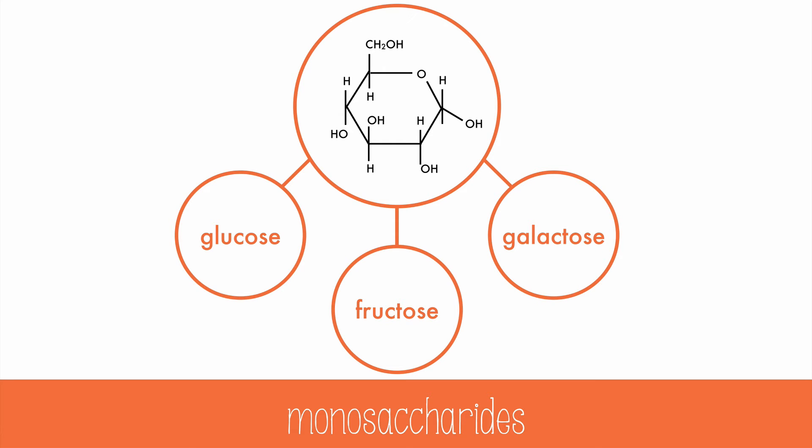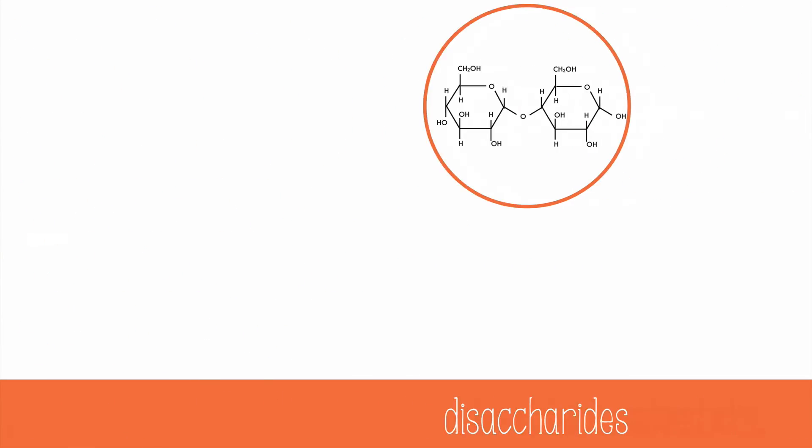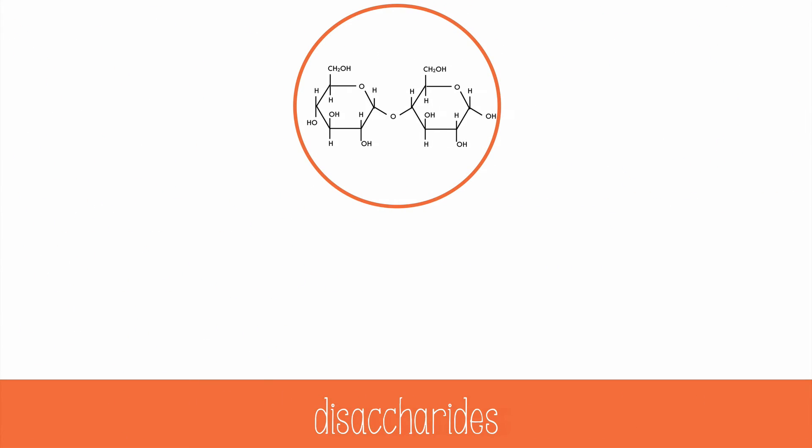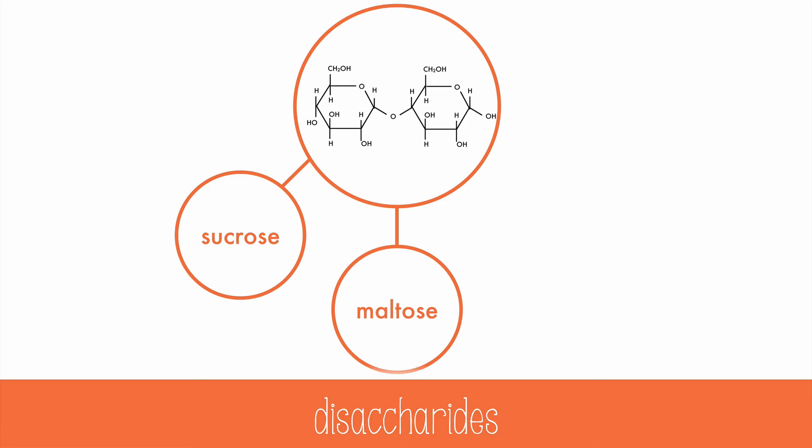You can combine two of any of these to make a disaccharide. Disaccharides include sucrose, maltose, and lactose. Some people don't produce enough of the enzyme lactase and have difficulty digesting the disaccharide lactose. They are lactose intolerant and need to avoid many dairy products.